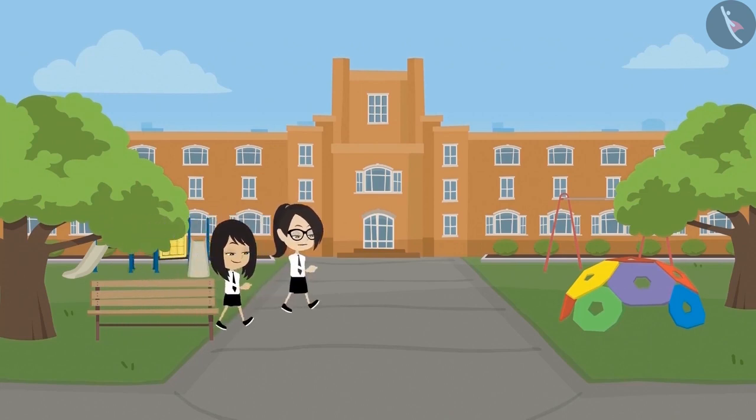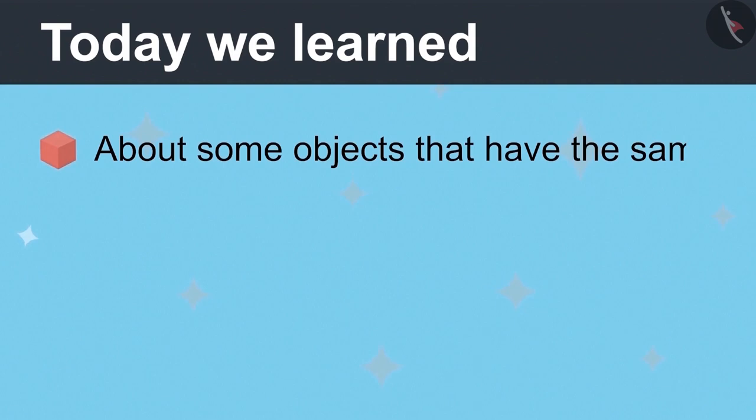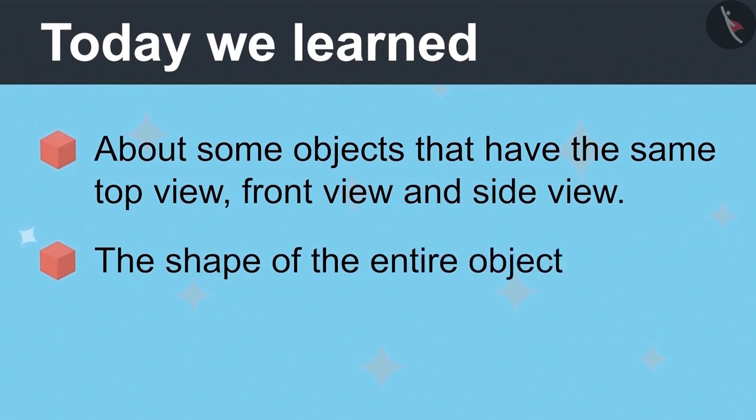Neha and Vandana have now understood that there are some objects that look the same from all sides. That's why the top view, front view, and side view of those objects are the same. And the shape of the entire object can be determined from just three views.